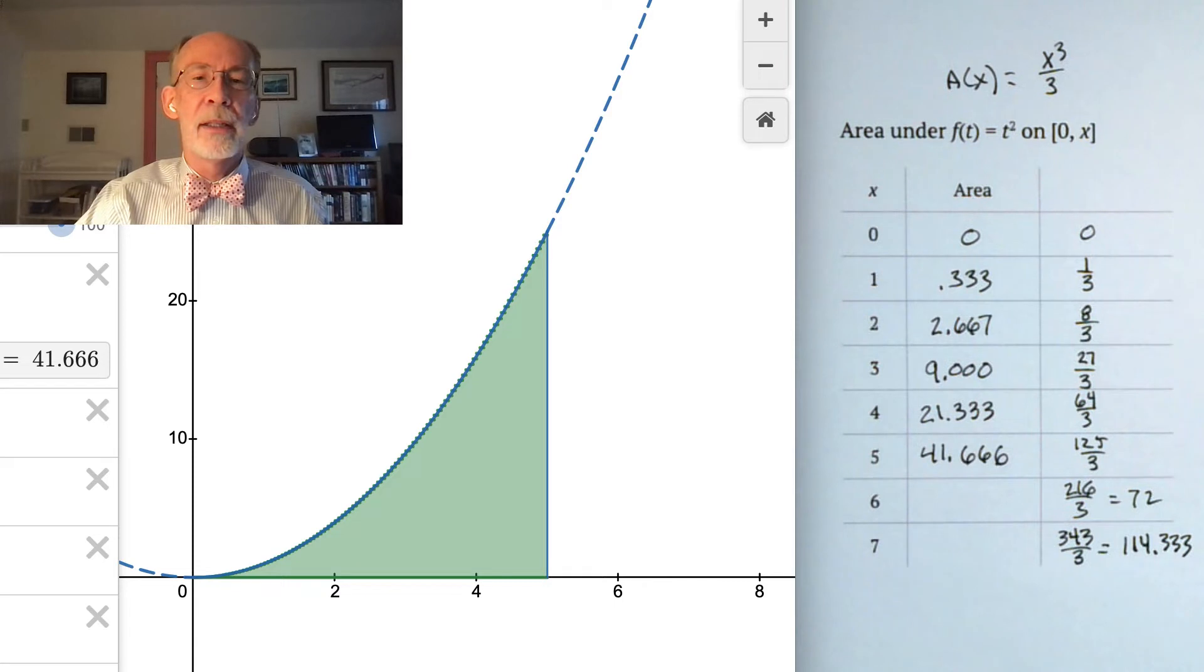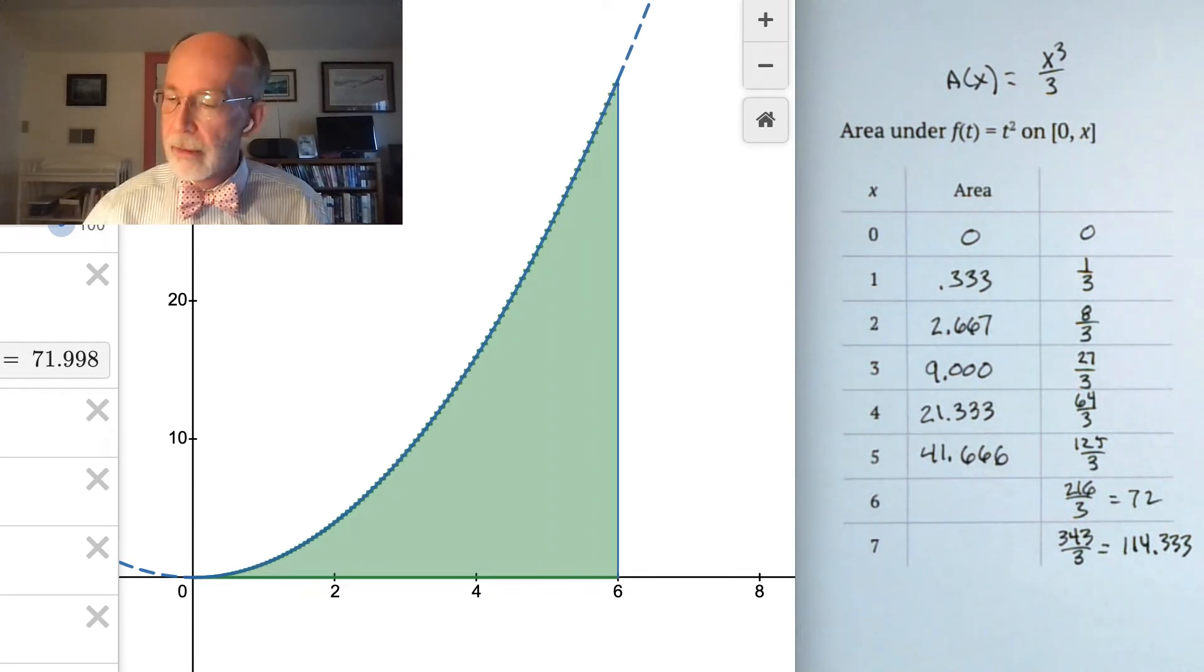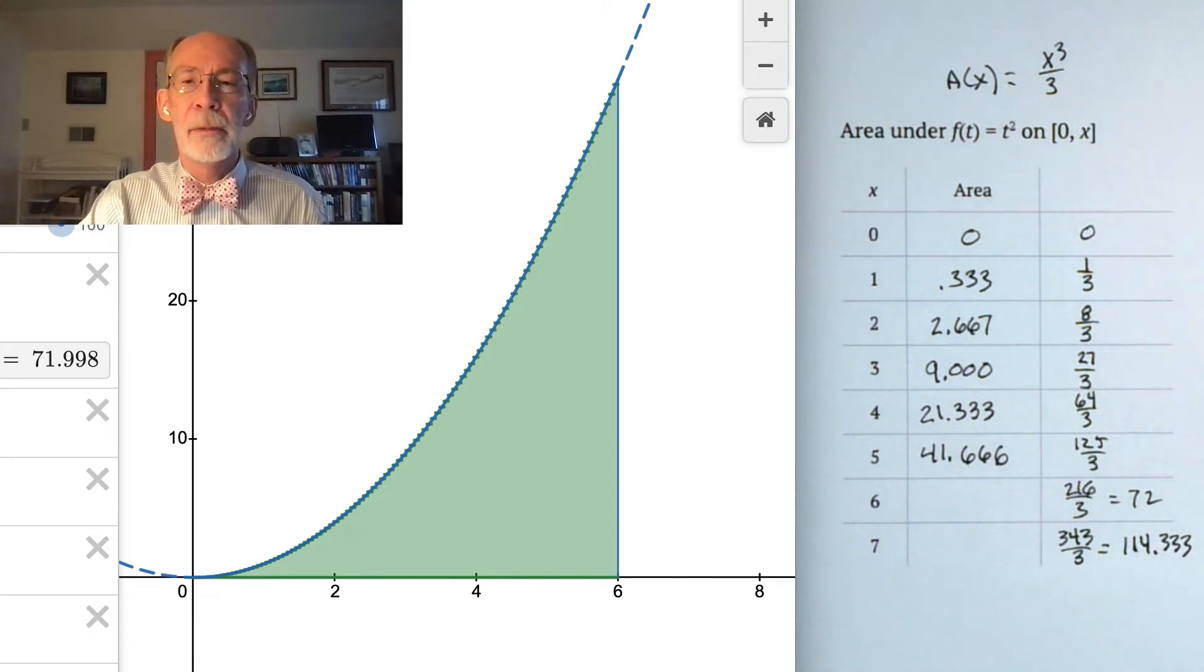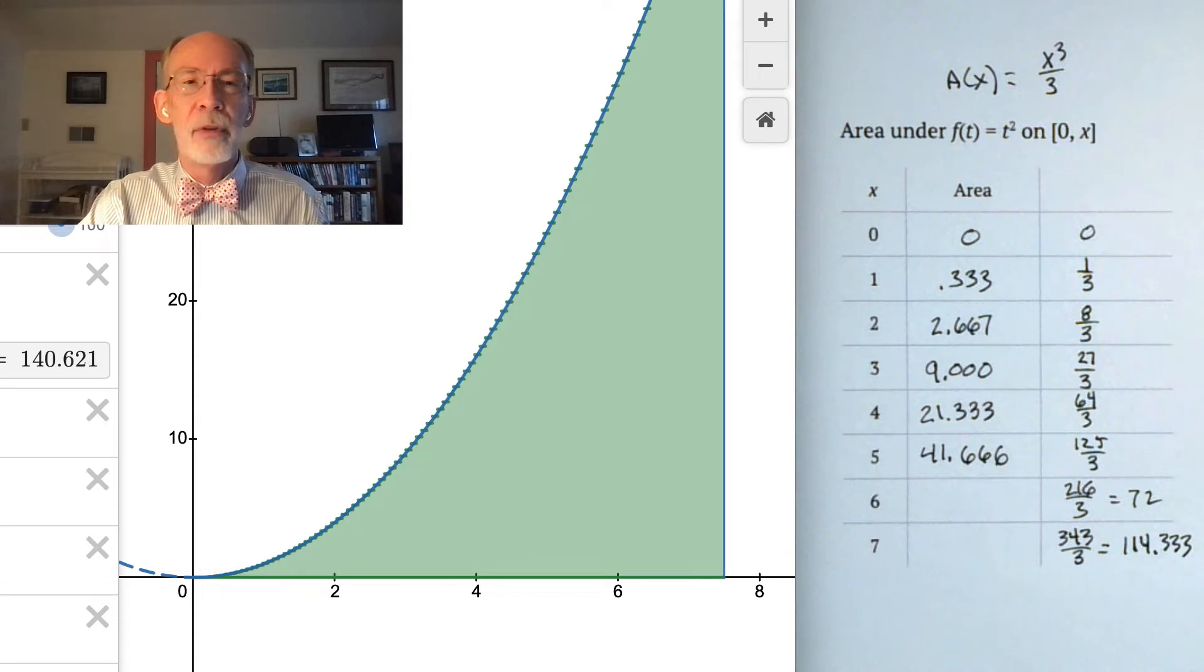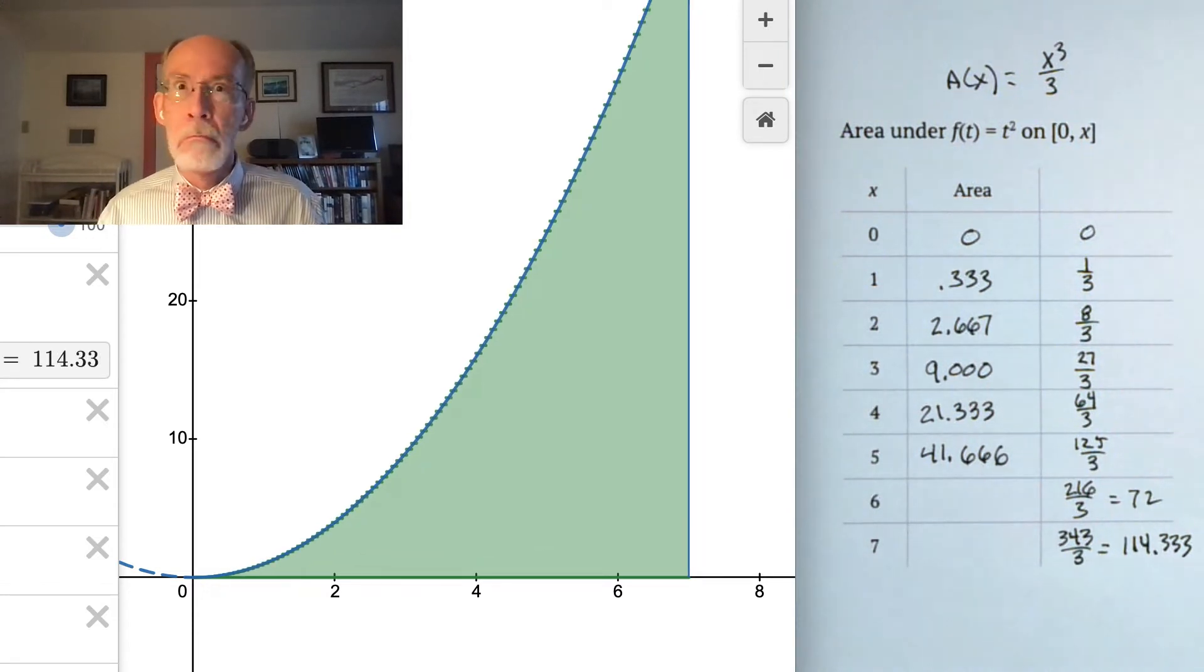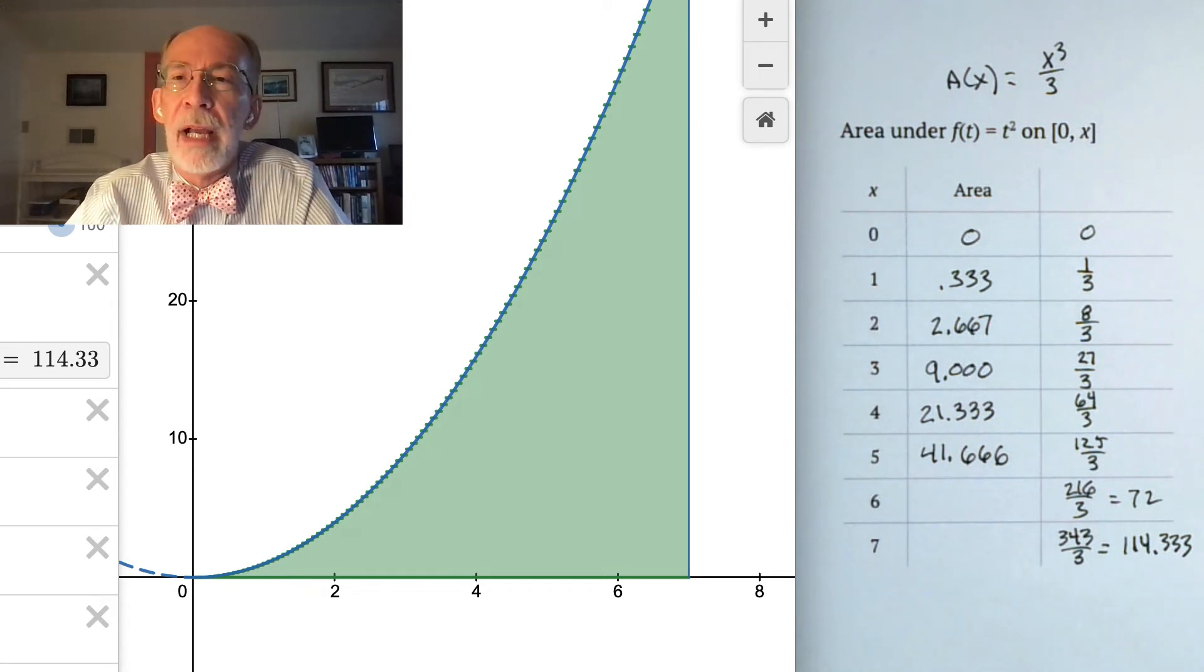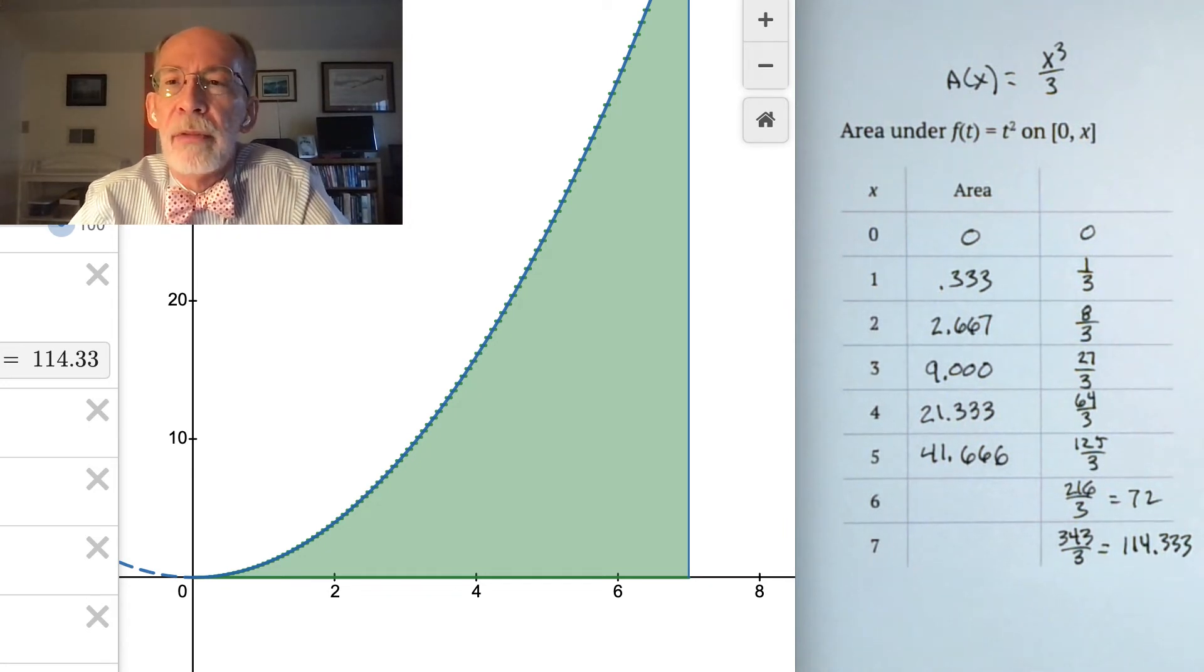So let's just dial this up to 6. What do you know? Basically 72, within a couple thousandths of 72. Let's dial it up to 7. This would seem to be the relationship that the areas under the squaring function from 0 to some x turn out to be x cubed over 3.